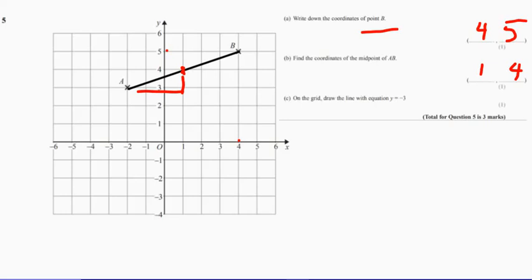And on part C, on the grid, draw the line with equation y equals negative 3. So where does that line go? We can see that, let me put the line in and then I'll explain. So the line y equals minus 3 is this line just down here.